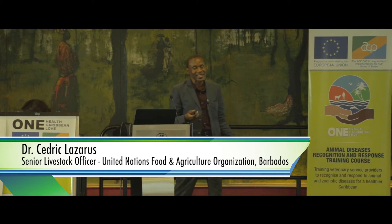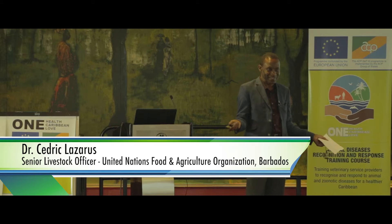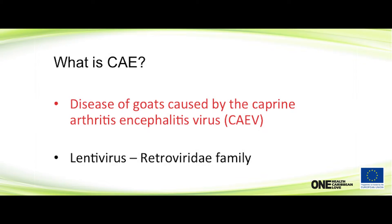The most important thing to know about CAE is that it's a retrovirus. If you know it's a retrovirus, then you know it's a persistent infection, there are no vaccines, and it's species-specific. So that is CAE in a nutshell — retrovirus, lentivirus — and there are not many of them. I'll show you a list of them later on.